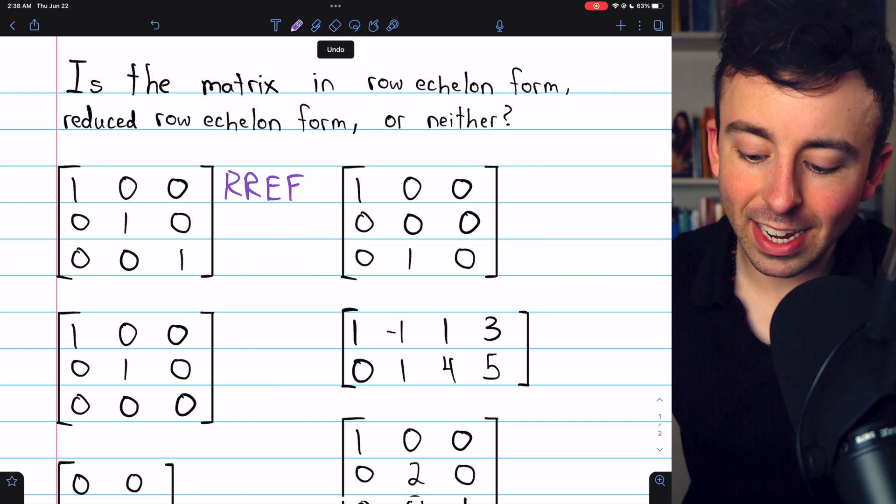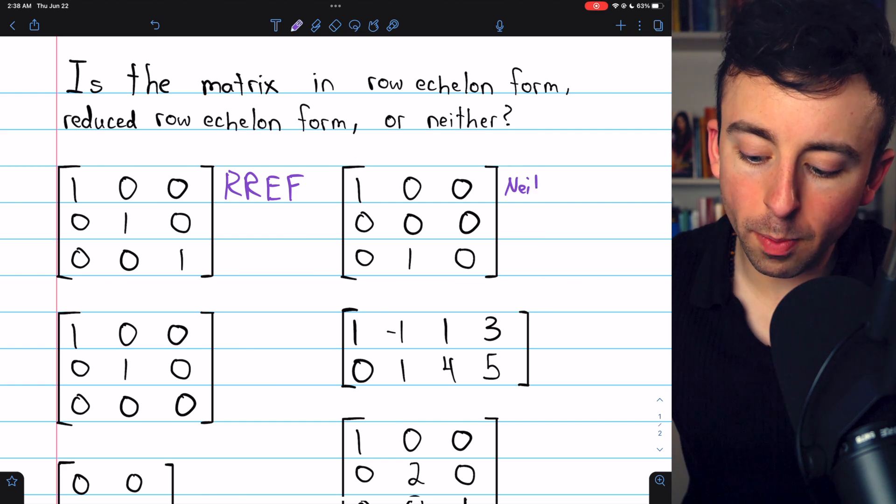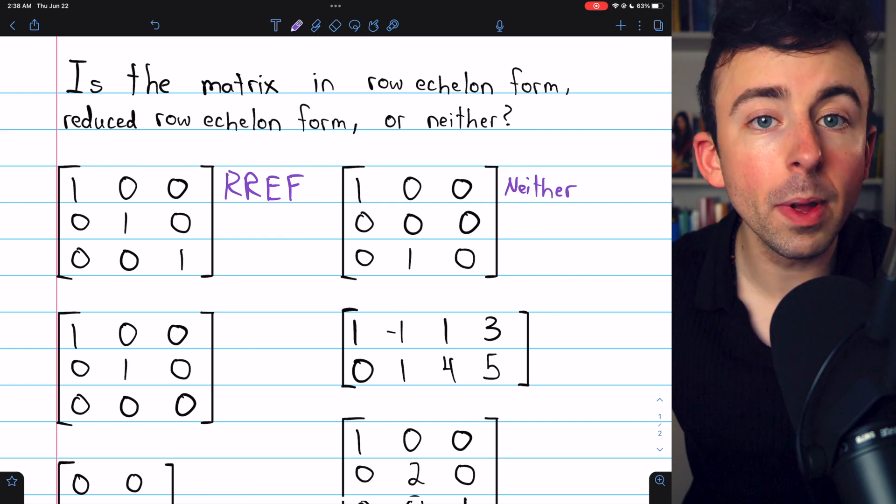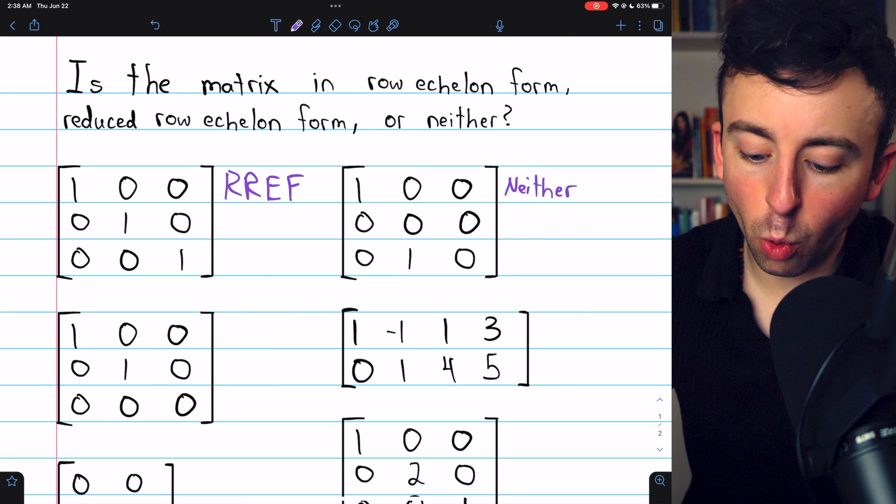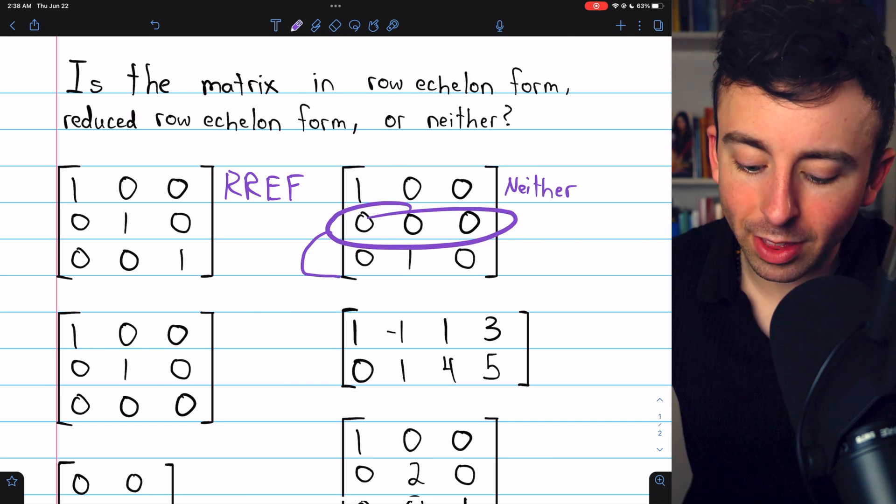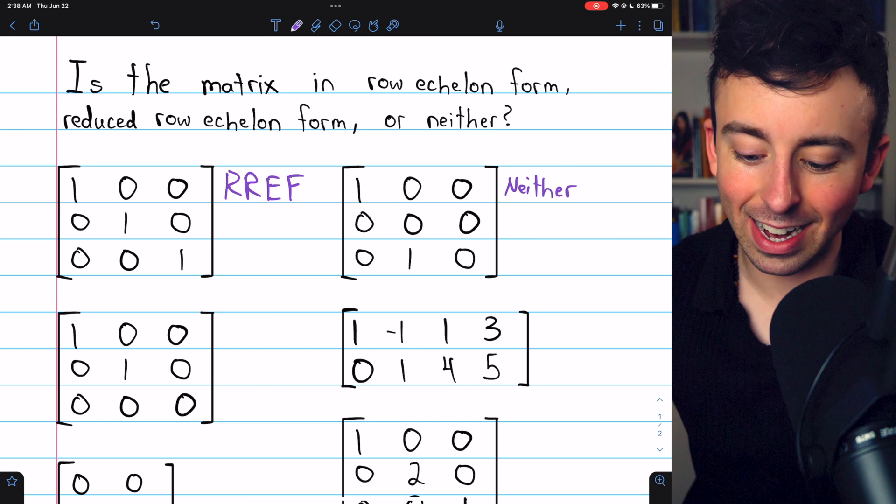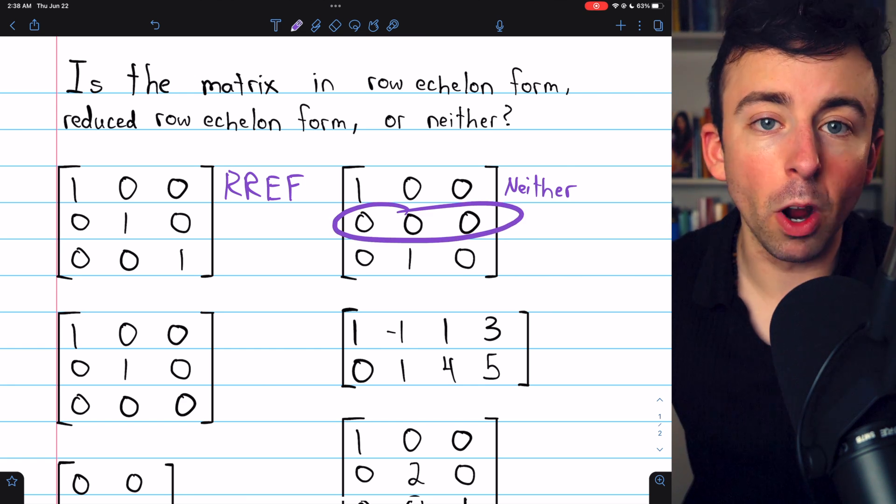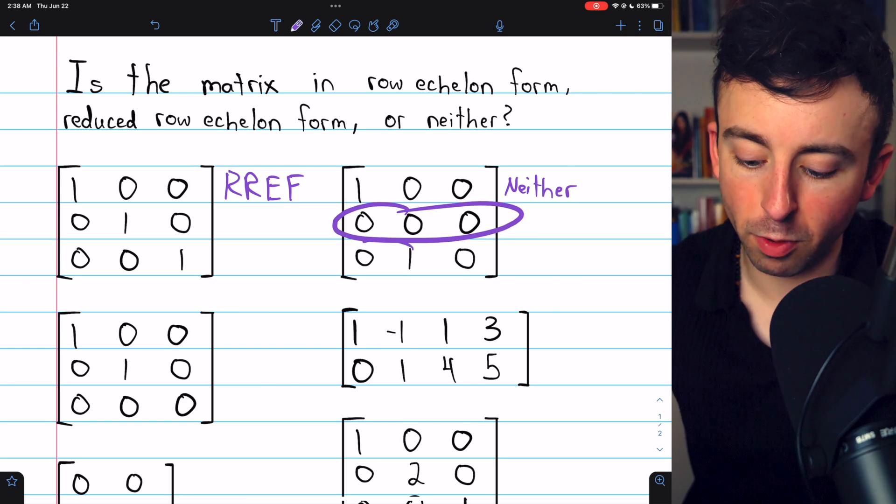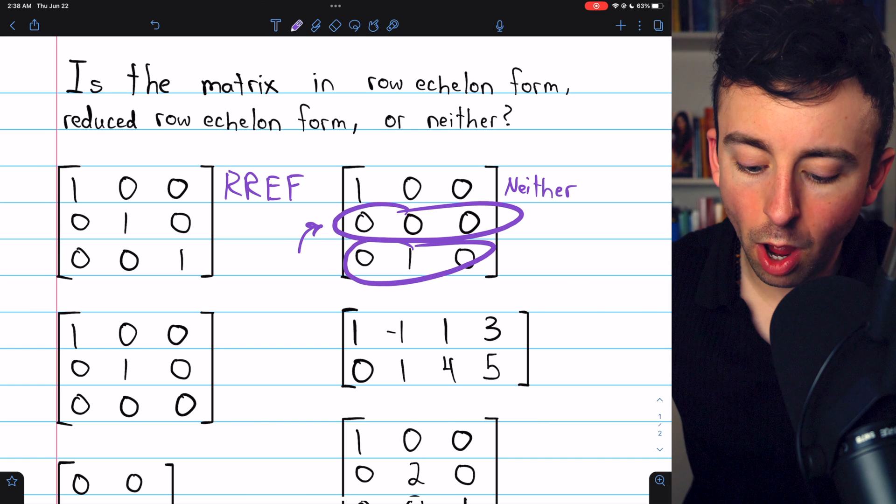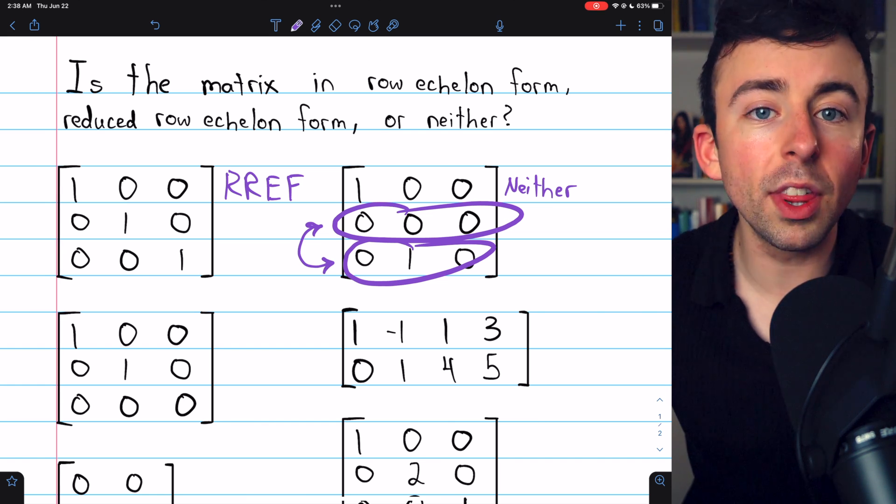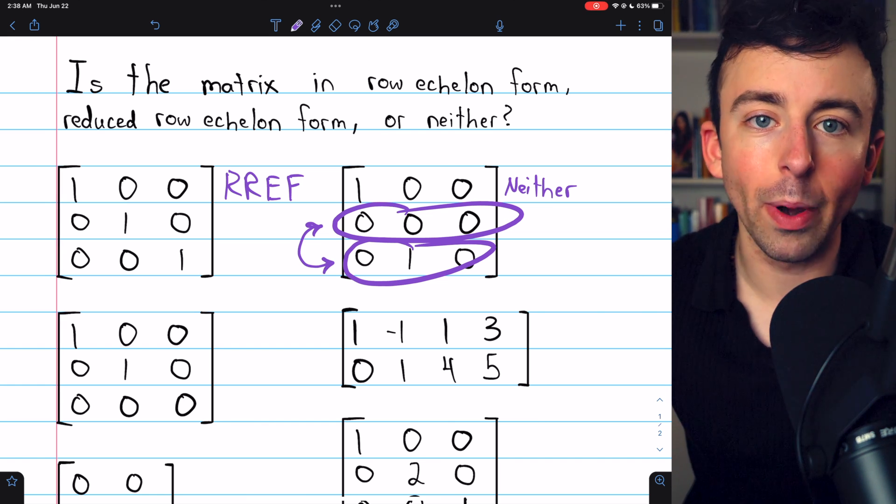This matrix is in neither row echelon form or reduced row echelon form. Both of those forms require that zero rows are at the bottom of the matrix, and this matrix fails that test. Row two is a row of zeros, which is above row three. If we were to swap these, the matrix would then be in reduced row echelon form.